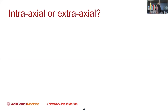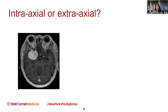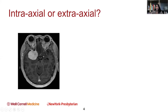Intraaxial or extraaxial — what does it mean to be intraaxial? This is a very typical example of a skull-based meningioma. We call these types of tumors extraaxial because they're actually arising from outside the brain. These typically arise from the meninges, from the dural covering, and they push into the brain.